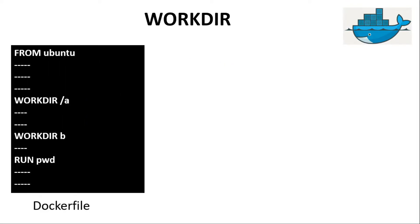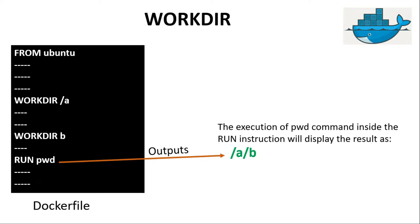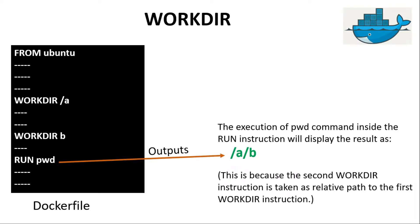Similarly, if we have two WORKDIR instructions inside the Dockerfile — the first with path `/a` and the second with path `b` — then if we run the `pwd` command after the second WORKDIR instruction, the output will be `/a/b`. The second WORKDIR instruction is treated as a relative path to the first WORKDIR instruction.